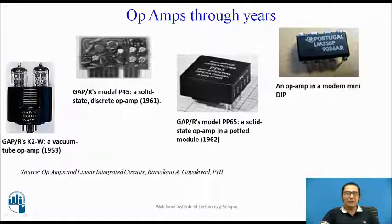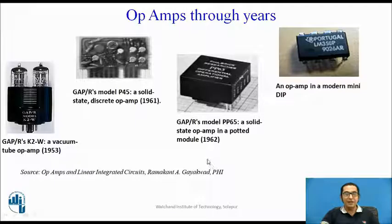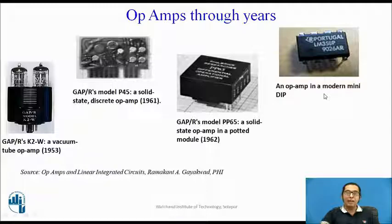Just to have a look at how the op-amp has evolved: the first op-amp was introduced in the year 1953, and that op-amp was designed using vacuum tubes. Then the op-amp was designed using solid-state discrete components. Then in 1962, it was available as a potted module, and then the modern-day op-amp is available as a DIP IC.